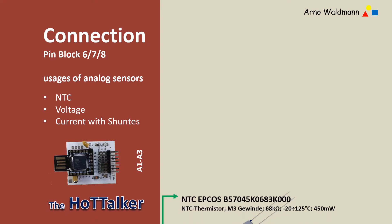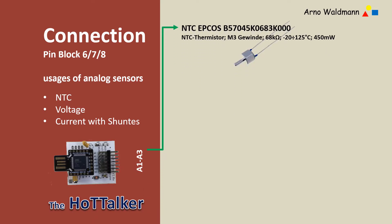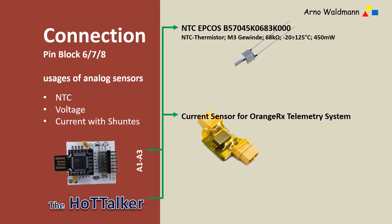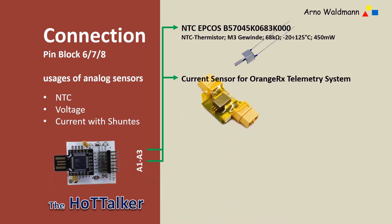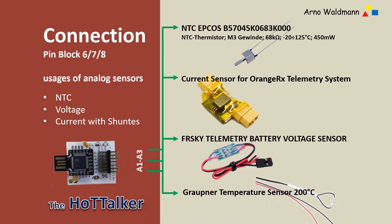The first is an NTC temperature sensor from EPCOS with a thread that can be soldered to an engine, for example. Second, a current sensor from the Orange RX telemetry system. Thirdly, an easy-to-configure voltage divider from Frsky. The last one is a temperature sensor up to 200 degrees from Graupner, which is very easy to handle.